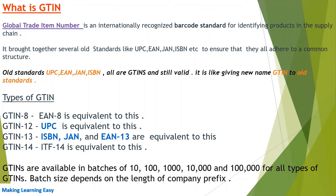GTINs are available in batches of 10, 100, 1,000, 10,000, and 1 lakh maximum for all types of GTINs. The batch size depends on the length of the company prefix. The company prefix is the code given to the manufacturer or company selling the product by GS1. This company prefix is used in the GTIN, and its length determines how many GTINs you can purchase from GS1. We will see this in detail in other videos.